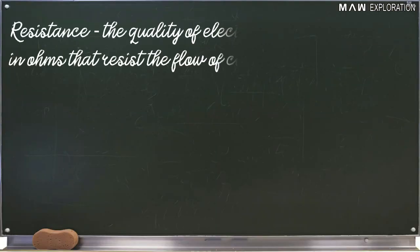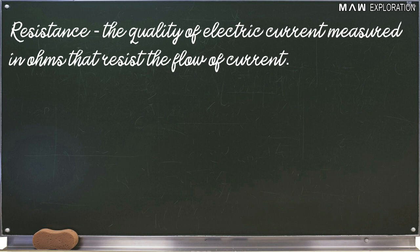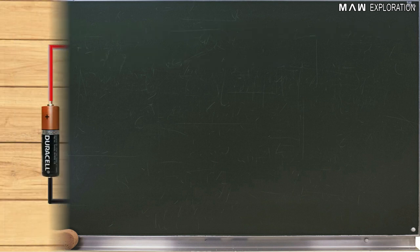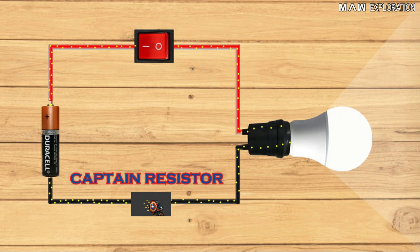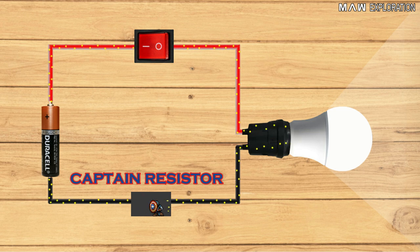Number five, resistance. Resistance is the quality of electric current measured in ohms that resists or controls the flow of current. The volume control on your television or cell phone is one of the best examples of a resistor controlling the flow of electrons.